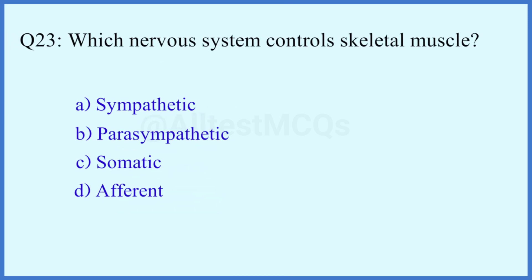Question number 23. Which nervous system controls skeletal muscles? The right answer is option C: Somatic.